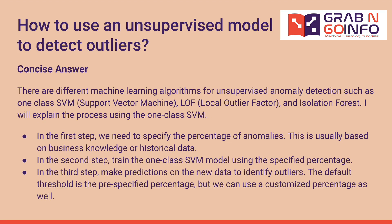Follow-up question 3: how to use an unsupervised model to detect outliers. There are different algorithms for unsupervised anomaly detection, such as one-class support vector machine, local outlier factor, and isolation forest. Using the one-class SVM as an example: in the first step, specify the percentage of anomalies based on business knowledge or historical data. In the second step, train the one-class SVM model using that specified percentage. In the third step, make predictions on new data to identify outliers.